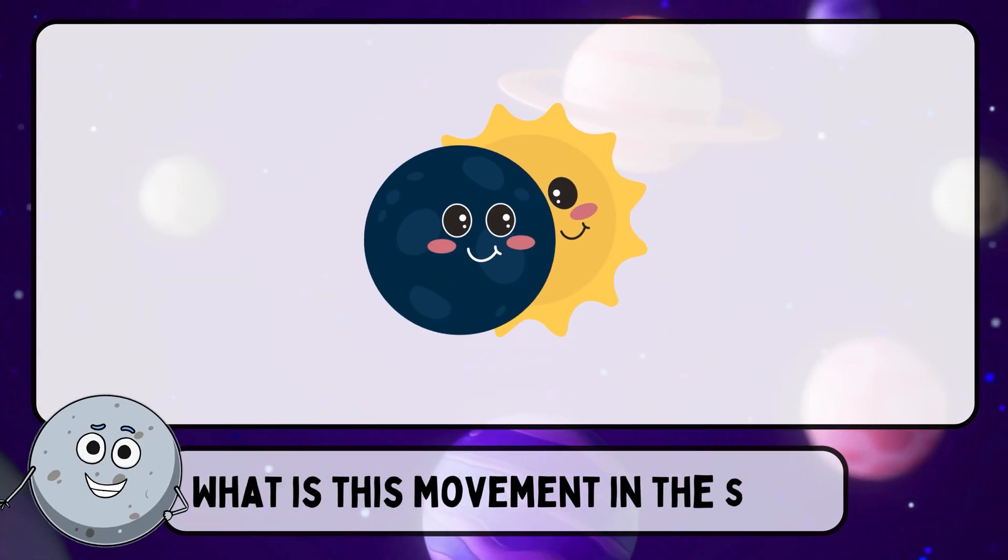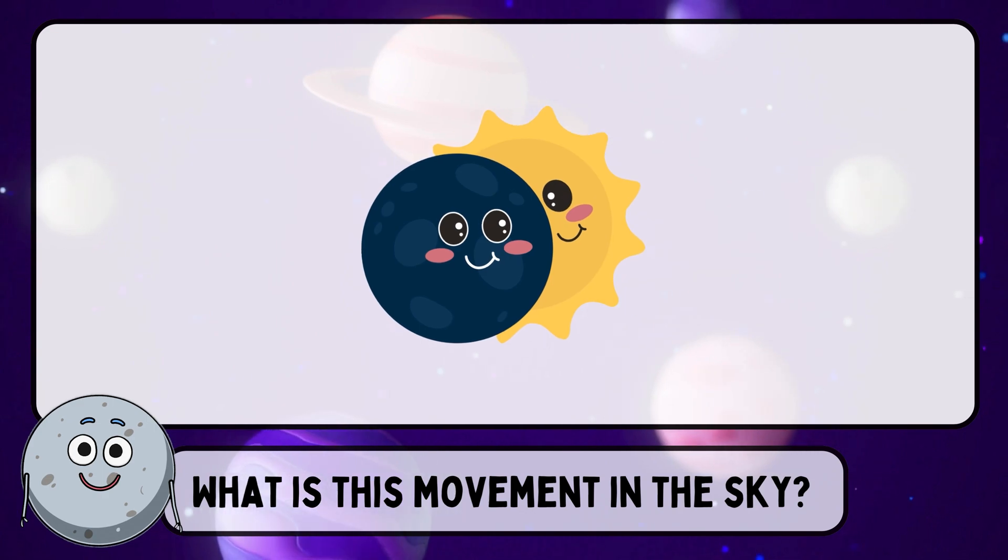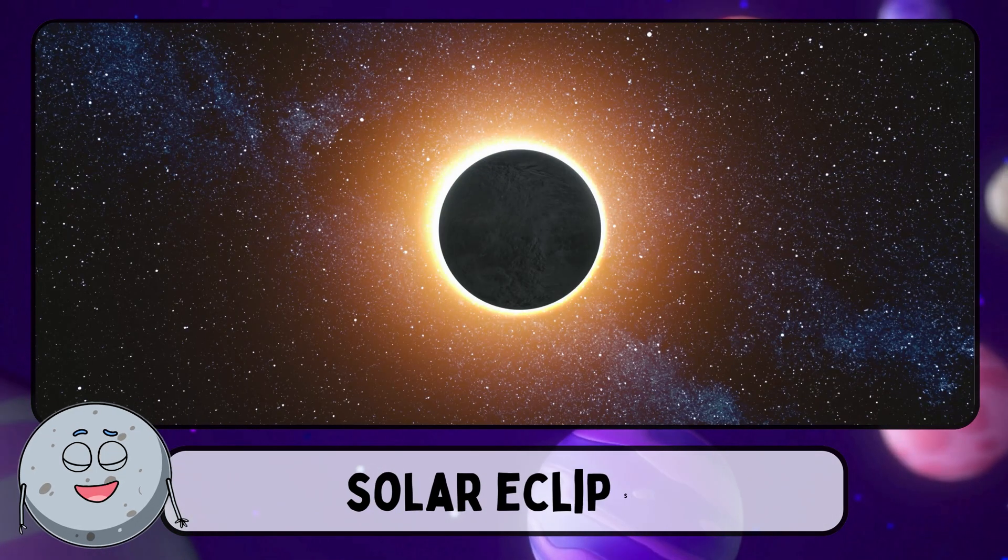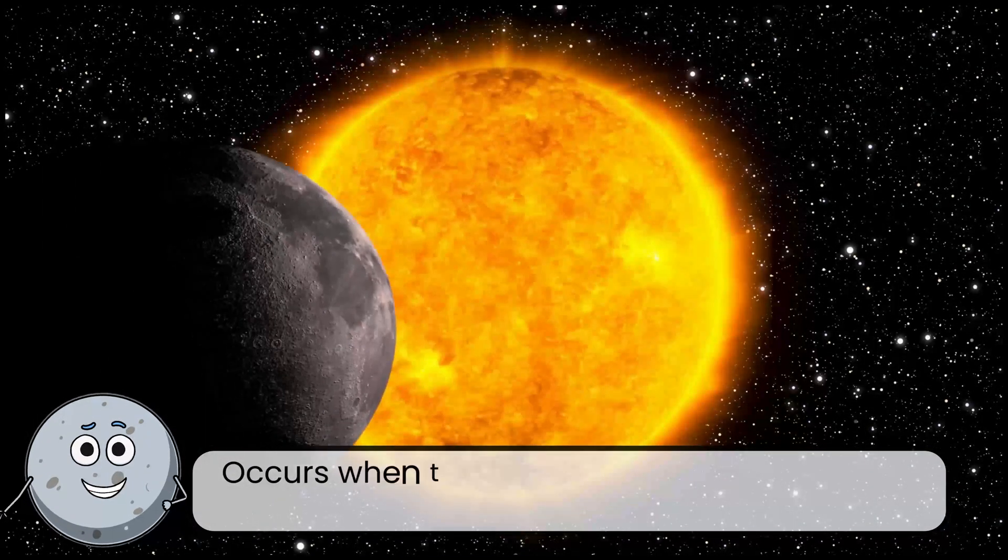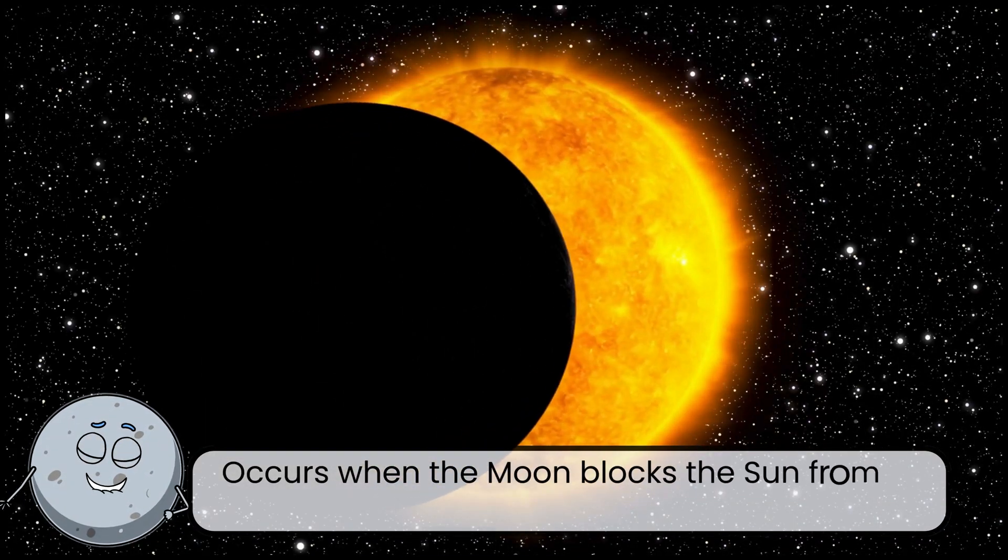What is this movement in the sky? This is a solar eclipse. Occurs when the moon blocks the sun from view on Earth.